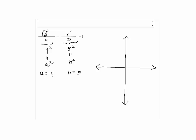4 corresponds to the x value, so we go to the right by 4 and to the left by 4, and 5 corresponds to y, so that will go up by 5 and go down by 5.